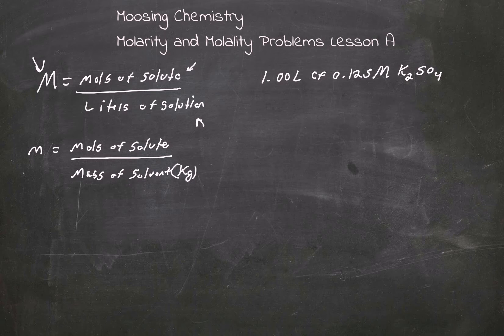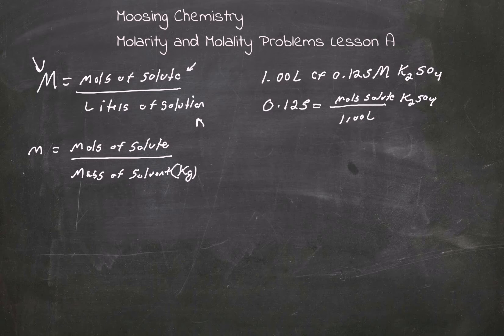What if we had 1.00 liters of 0.125 molarity K₂SO₄? We know that 0.125 equals moles of solute over 1.00 liters. So this is going to give me 0.125 moles of K₂SO₄.